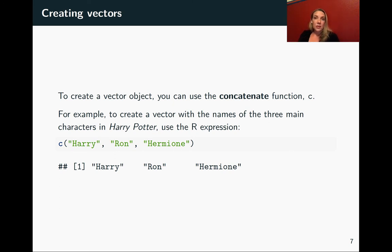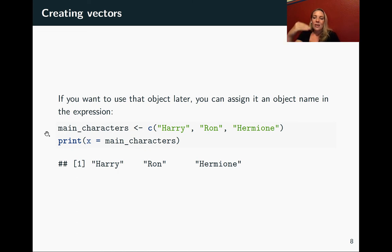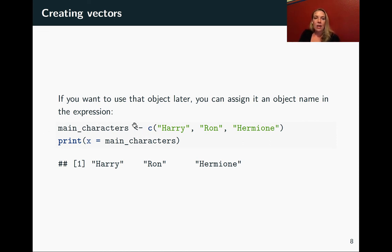To create any of these vector objects, you'll use a function called concatenate — one of the shortest functions we'll see, it's just `c()`. Here's an example of creating a vector with the names of those three characters, where all the data is in the character class. Each string goes inside quotation marks, separated by commas. Just running it prints it out, but to save it for later, you should assign it to an object using the gets arrow. In this case I named it `main_characters`, and later I can just refer to that object name rather than typing everything out again.